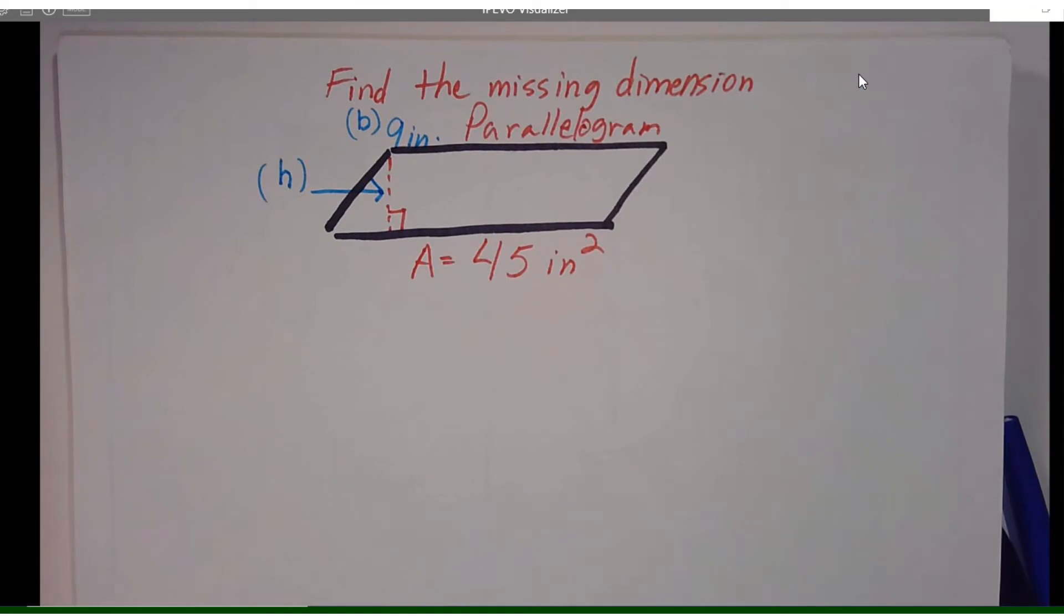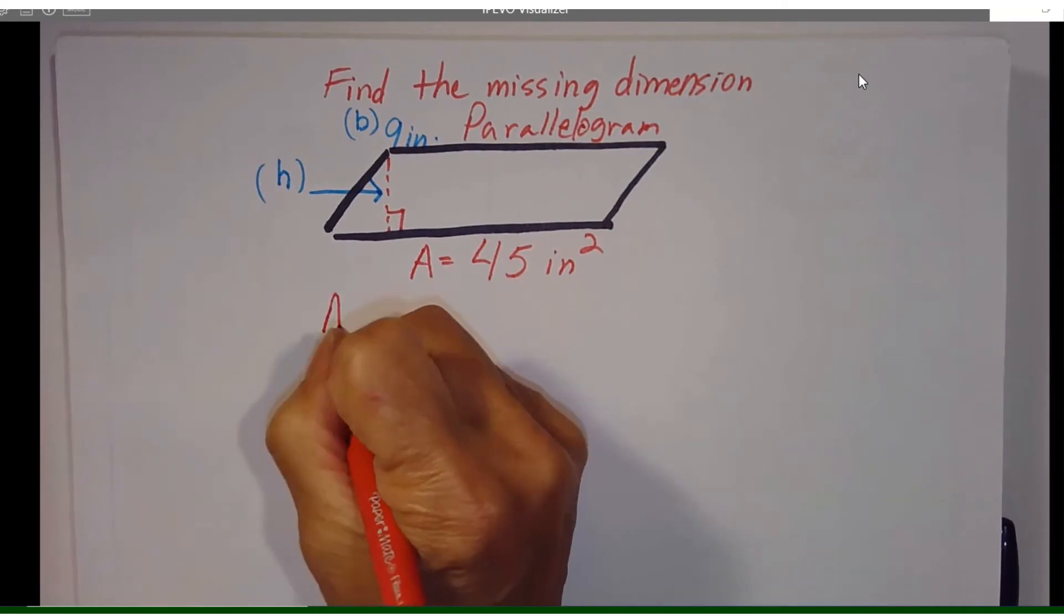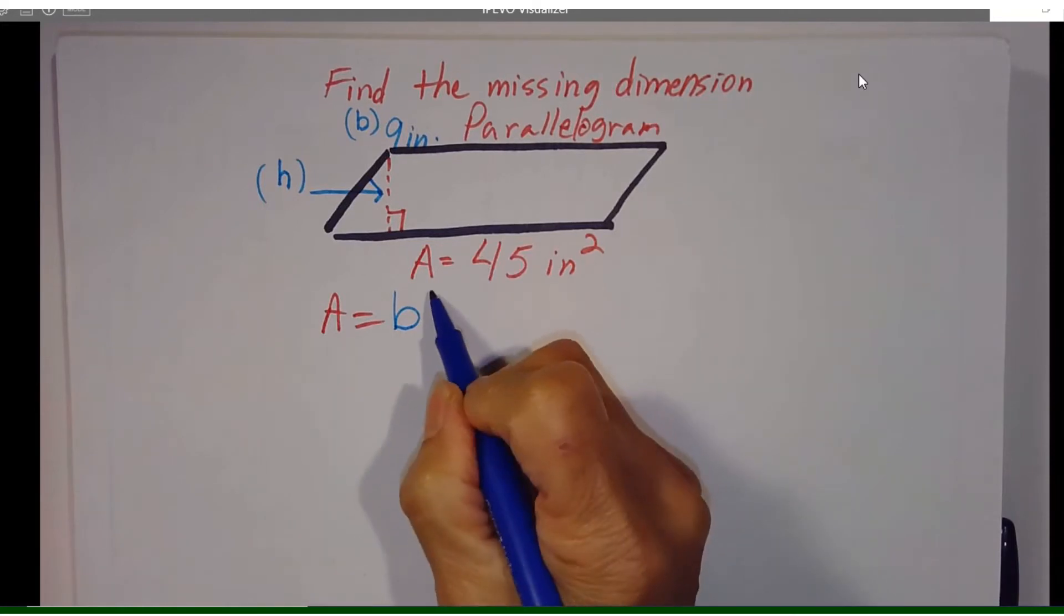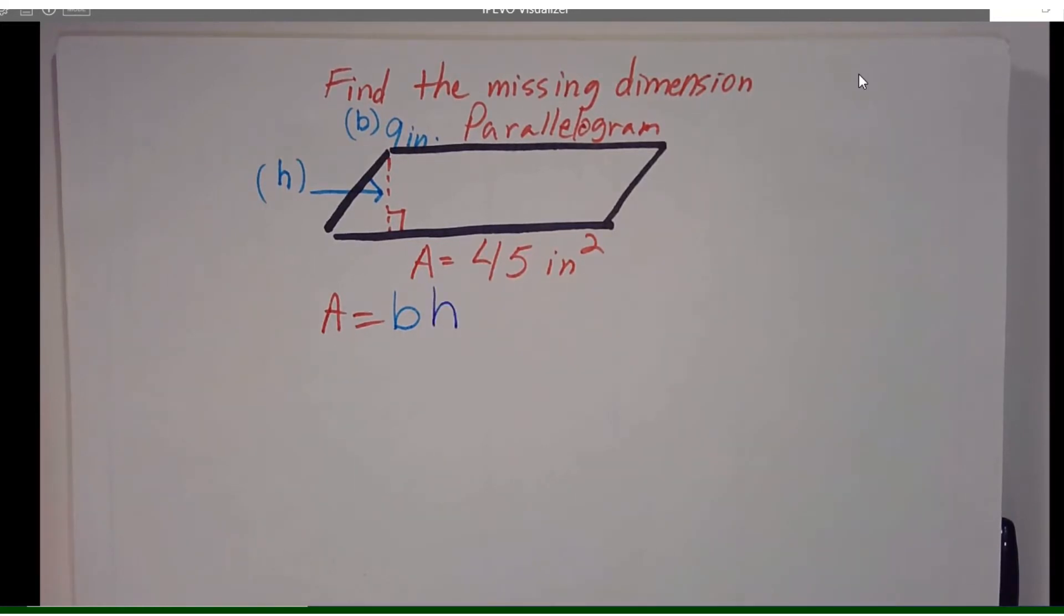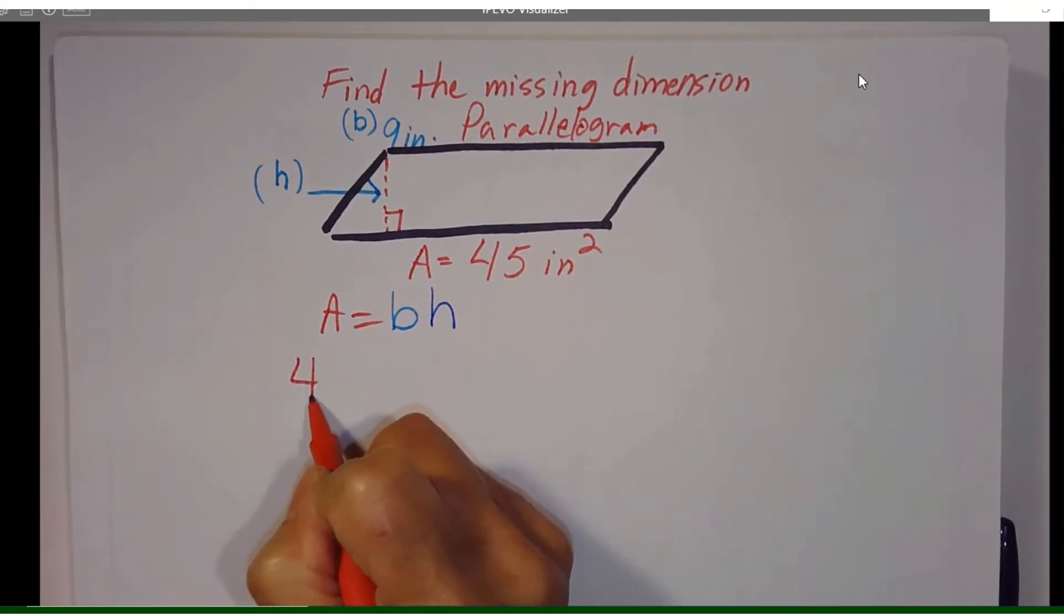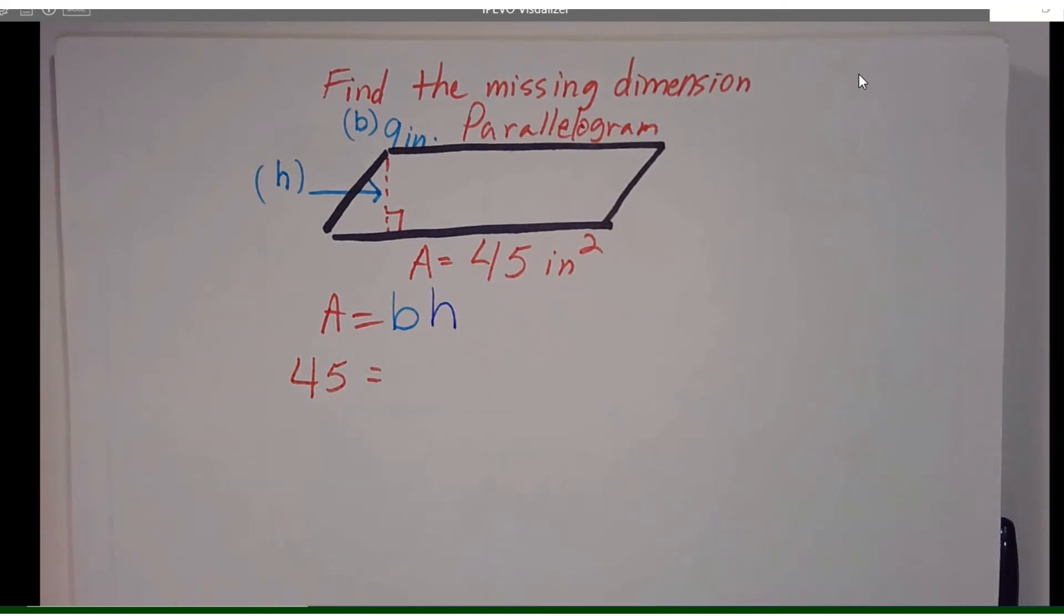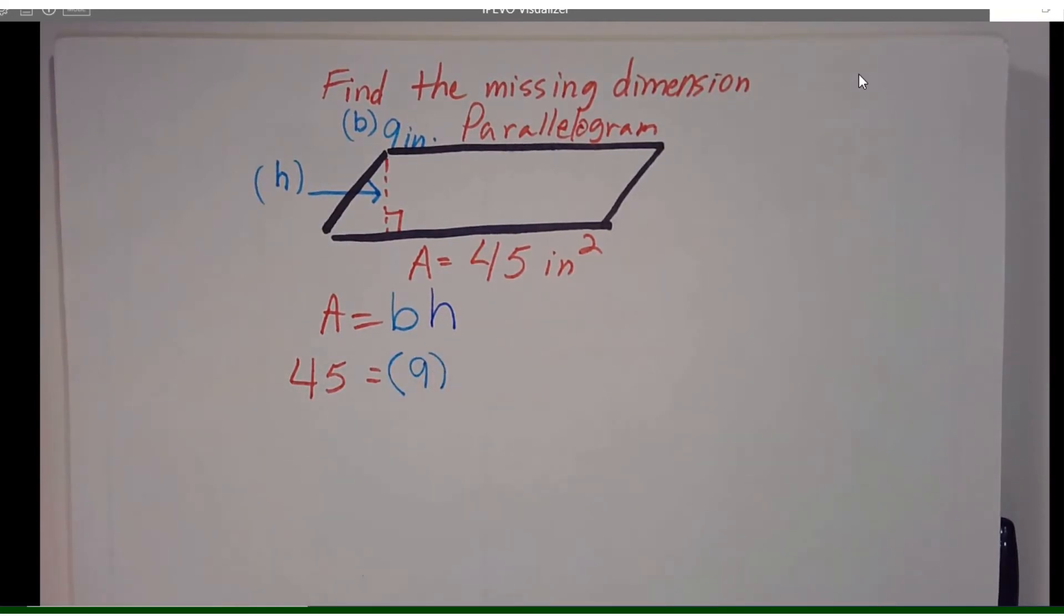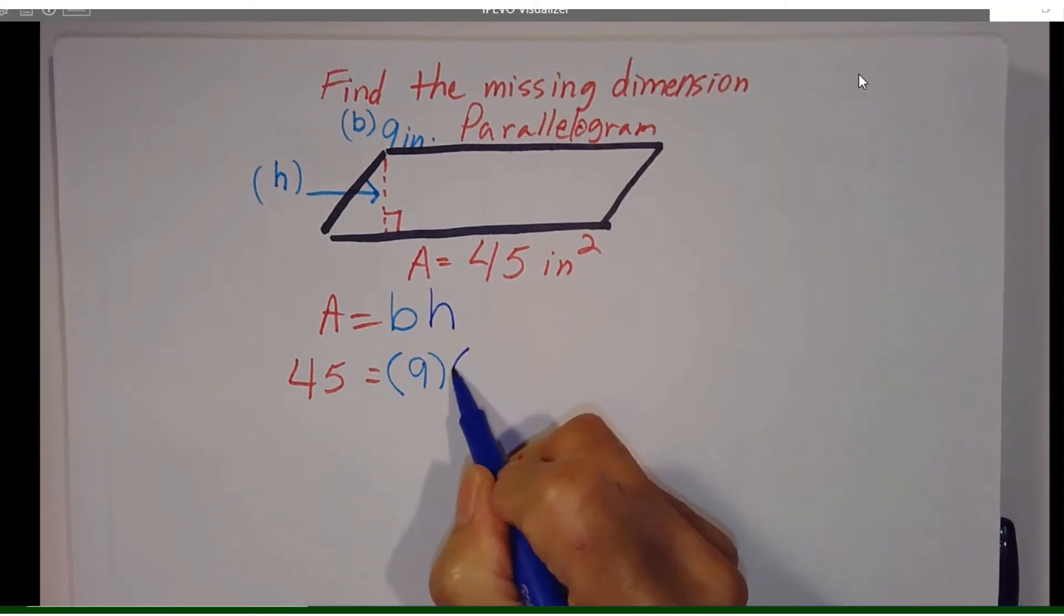So let's do our regular formula. Area equals B times H. Now because I know what my area is it's 45. I know what my base is which is nine. I do not know what my height is so I'm going to put an H here.